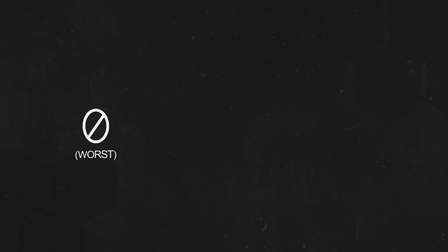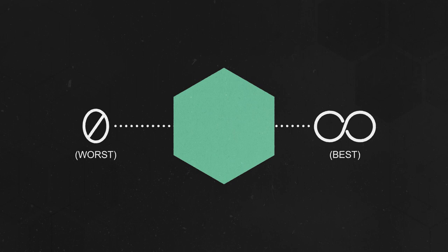Basically, it scores images on a scale from zero, being the worst, to theoretically infinity, the best. The IS is based on two factors: quality, or how good the image is, and diversity, or the variety and randomness of the images it produces.